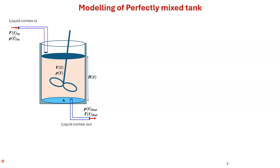Today I will talk about modeling of a perfectly mixed tank. Liquid comes into the tank with flow rate F_in and density ρ_in, and liquid comes out with flow rate F_out and density ρ_out. Inside the tank, the liquid holdup is VT (volume of liquid) with density ρT, maintaining a height HD. The area of the tank is A.